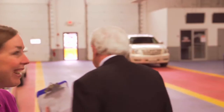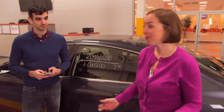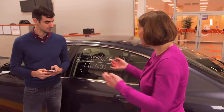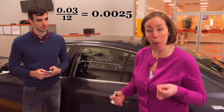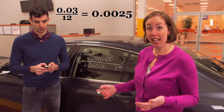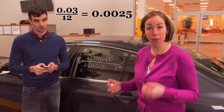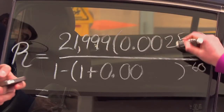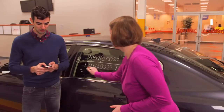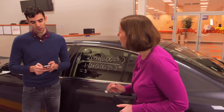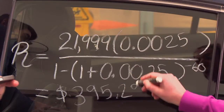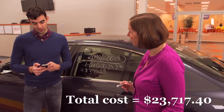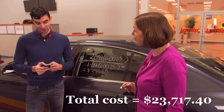Can you give us another minute? Let's compare these two scenarios. In the first scenario, we can calculate your new periodic interest rate by taking the 3% APR, or 0.03, and dividing it by 12 to get a new periodic interest rate of 0.0025. And if we substitute these values into our formula, we get a monthly payment of $395.29. And over a five-year loan, you'll have paid $23,717.40.